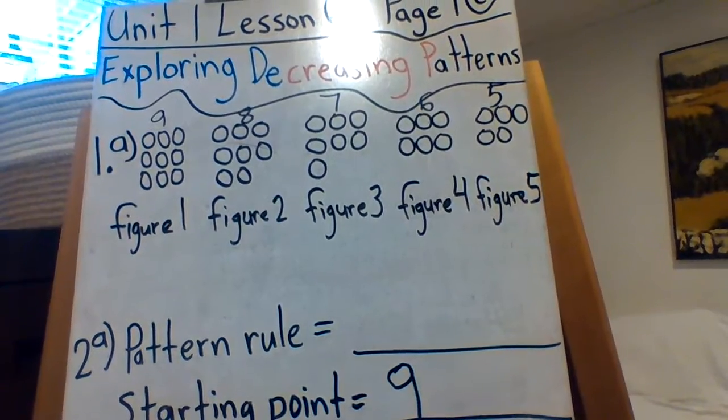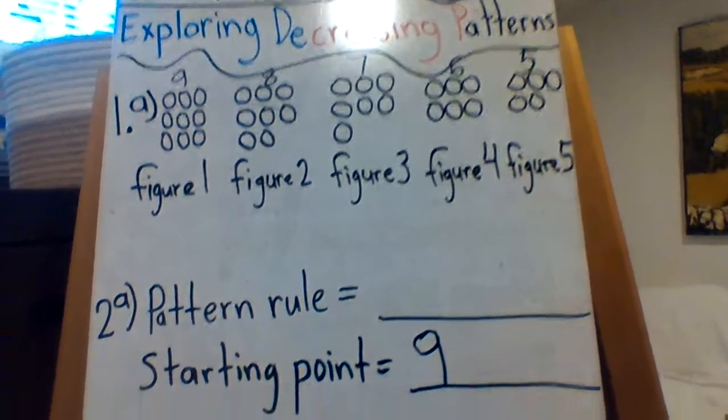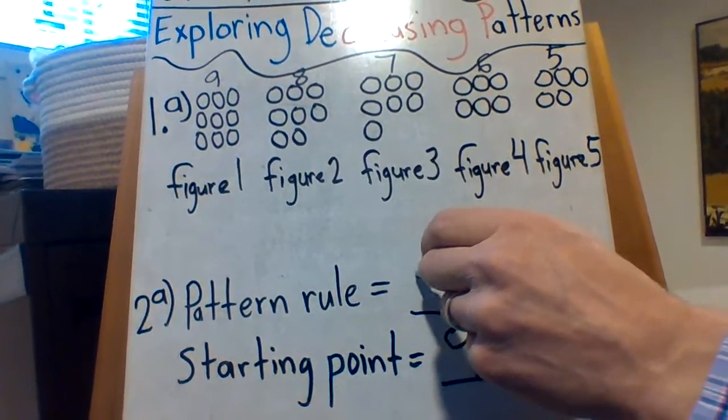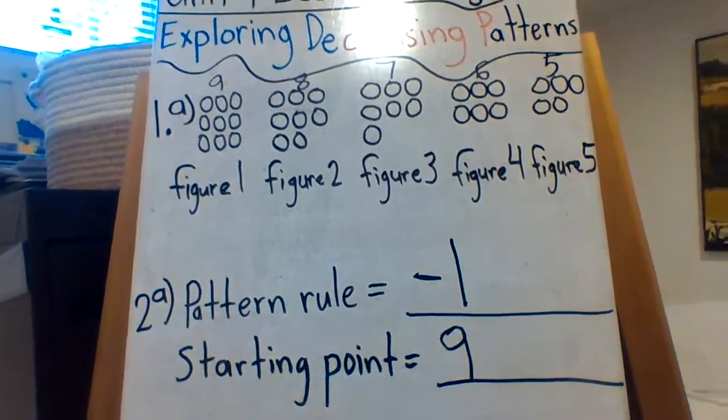So obviously, 2A says look at the patterns in question 1, write the pattern rule for each. Now it's not plus, it's subtract 1 is the pattern rule. There we go.